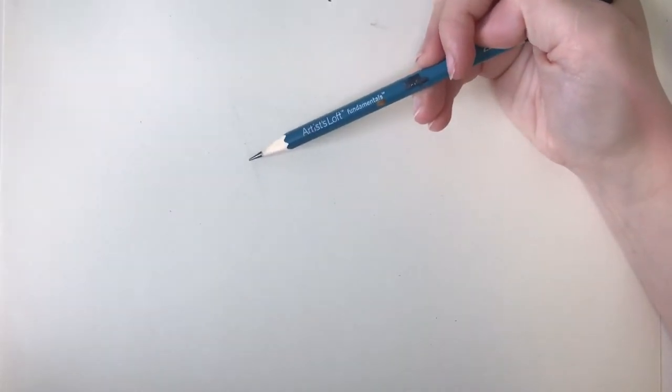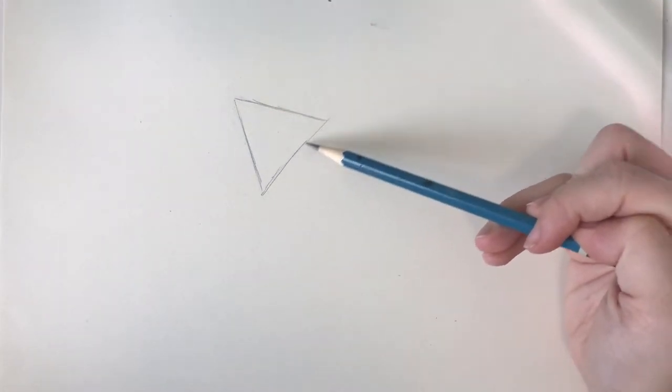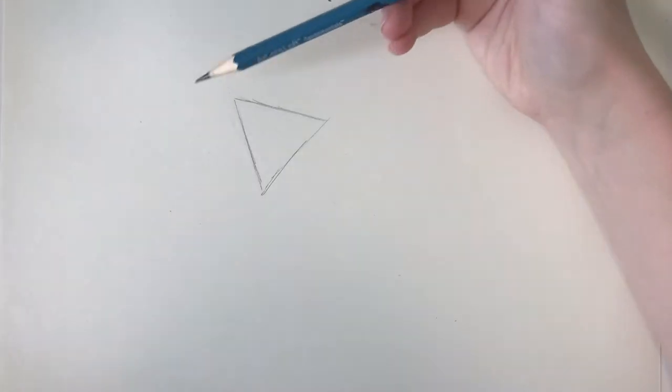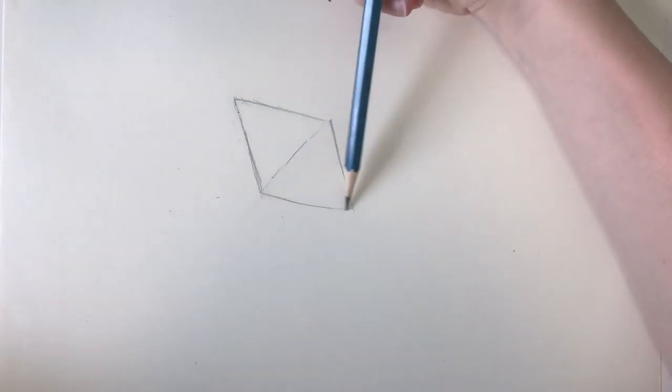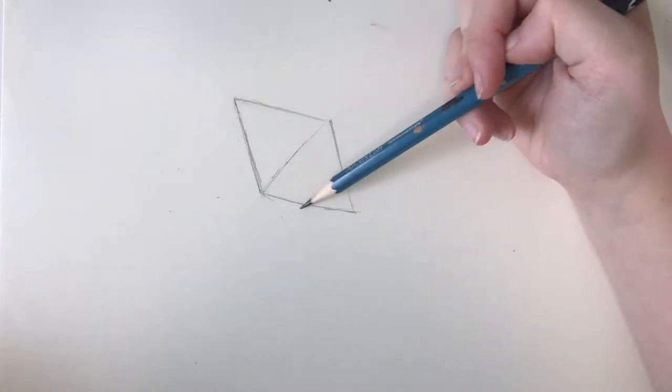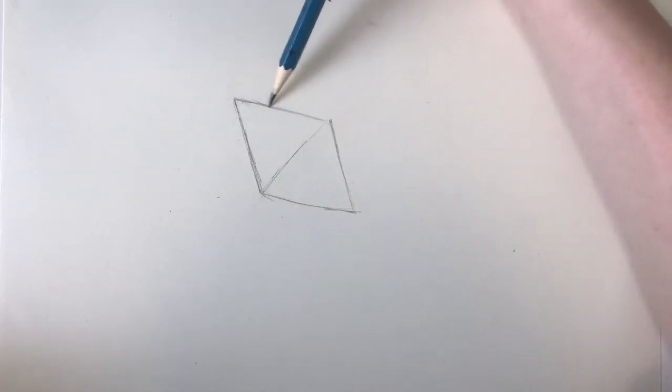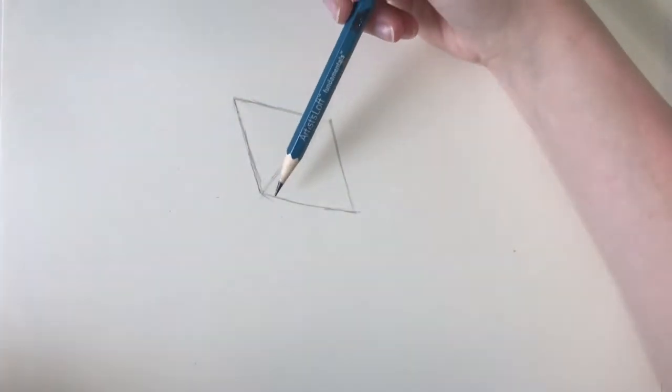Alright, so I'm going to start off just by drawing a triangle. I'm going to draw it a little bit crooked so that the kite will be kind of sideways. Then I'm going to draw another triangle upside down coming off of it. Now you could just start off by drawing this diamond shape, but I find it easier to break it down into smaller shapes.